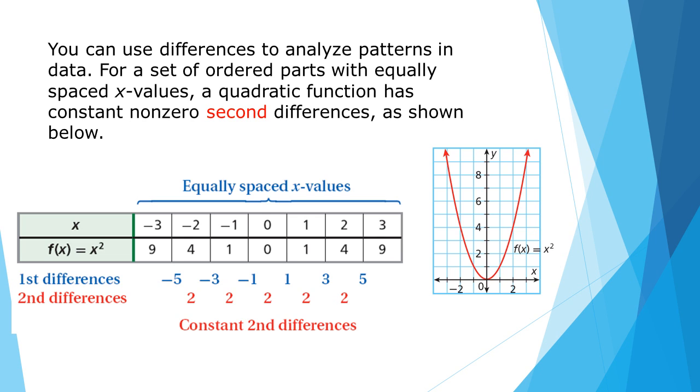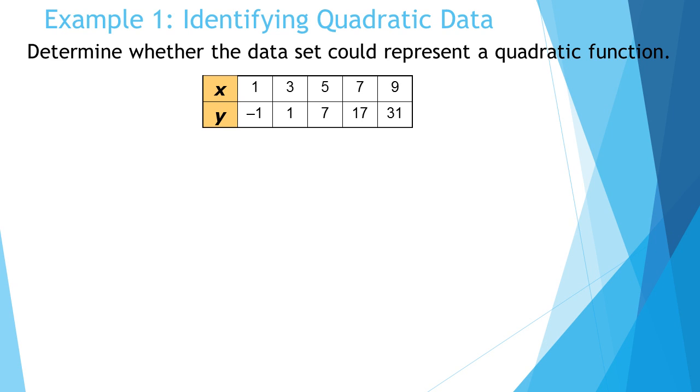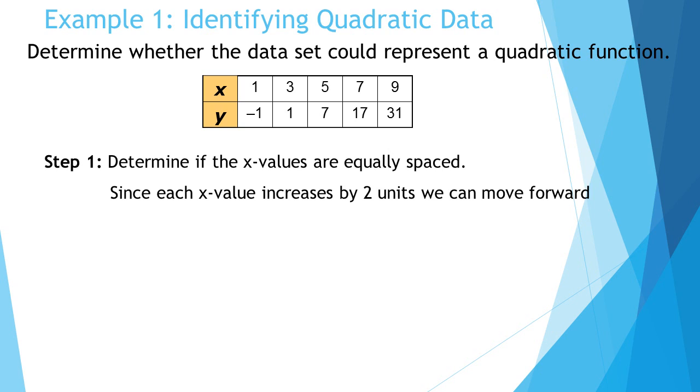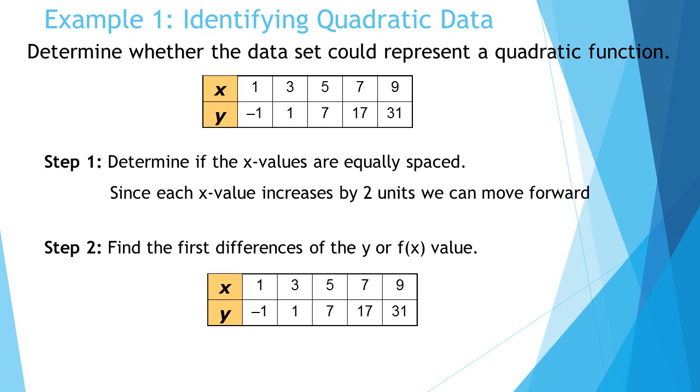Let's determine it. First you have to look and see if the x values are equally spaced. Each x value increases by two units, so we know we can move forward to check the differences of the y values or the f(x) values. Find the first differences - how far is it from negative 1 to 1, 1 to 7, 7 to 17, and 17 to 31. When you determine all of those you get 2, 6, 10, and 14. So we just identified all the first differences.